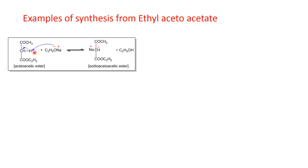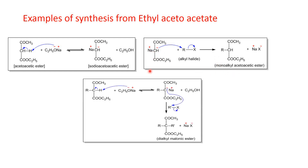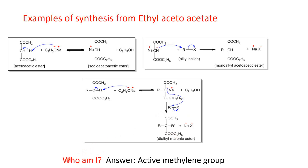Now let's see some examples of synthesis from ethyl acetoacetate. Here, this is the active methylene group. This strong base, sodium ethoxide, can take this hydrogen from this active methylene group — that is the proton — and form the carbon ion. This carbon ion is highly reactive, which reacts with the alkyl halide and can form the monoalkyl acetoacetic ester. Once again, the base can abstract this hydrogen and this carbon ion is formed, which can react with the alkyl halide again and form the dialkyl acetoacetic ester. So the answer to the riddle 'who am I?' is active methylene group.